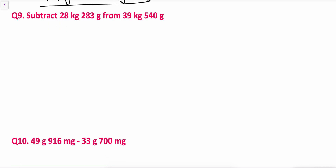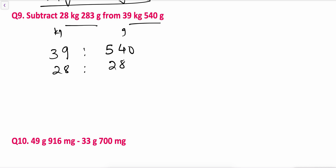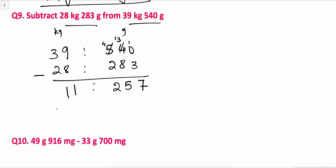Now let's see subtraction. Subtract 28 kg 283 grams from 39 kg 540 grams. Start from the right: 0 minus 3 — not possible, take borrow, it becomes 10 minus 3 is 7. 3 minus 8 — not possible, take borrow, 13 minus 8 is 5. 4 minus 2 is 2. For kg: 9 minus 8 is 1, 3 minus 2 is 1. The answer is 11 kg 257 grams.